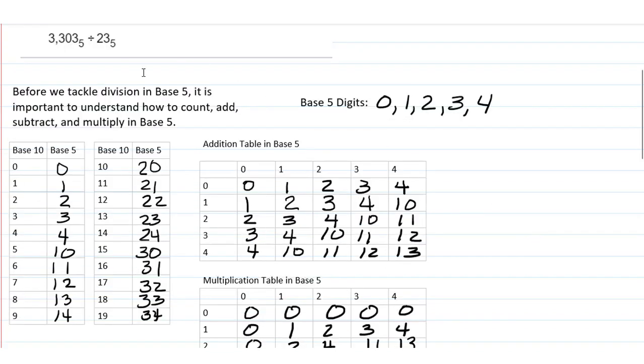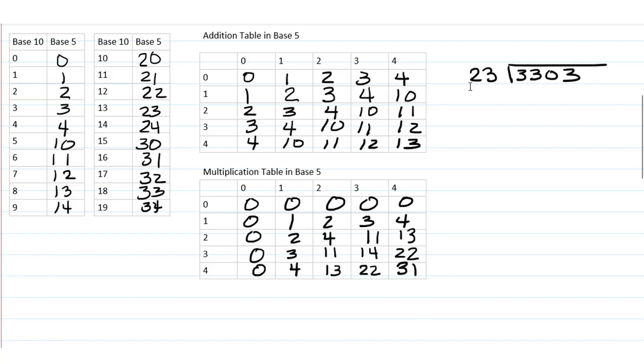And now we're going to try to divide 3303 base 5 divided by 23 base 5. Okay, so let's start with 23, but 23 goes into 33. I'm guessing 1 time. Let's take a look at multiplying 23 base 5 times 1 in base 5. So remember, using our multiplication table over here, 1 times 3 is 3, and 1 times 2 is 2. So we still have 23 in base 5.